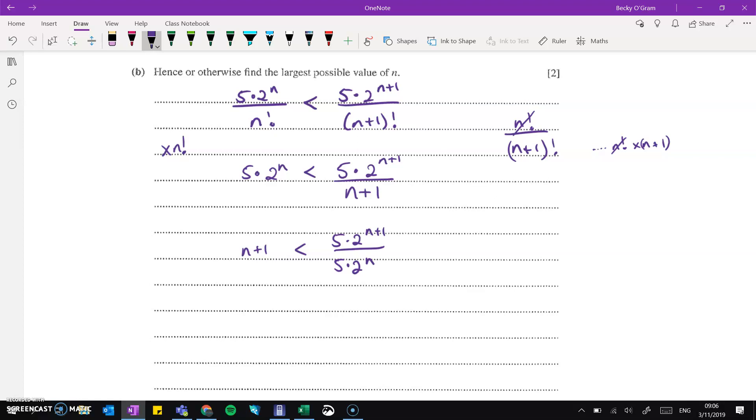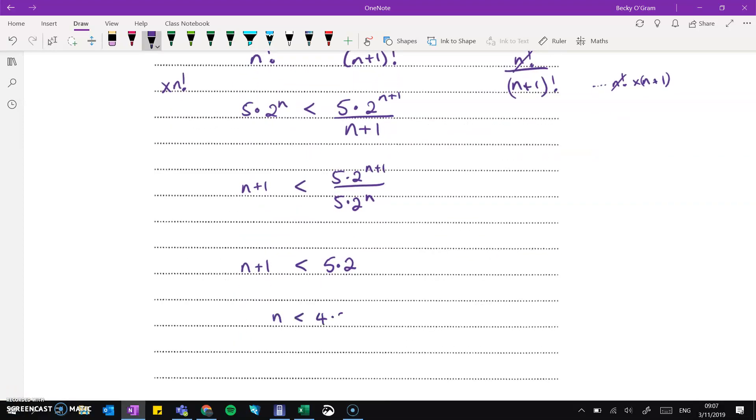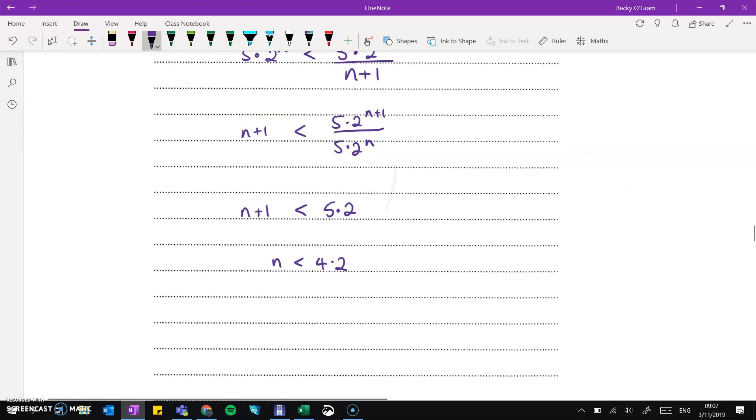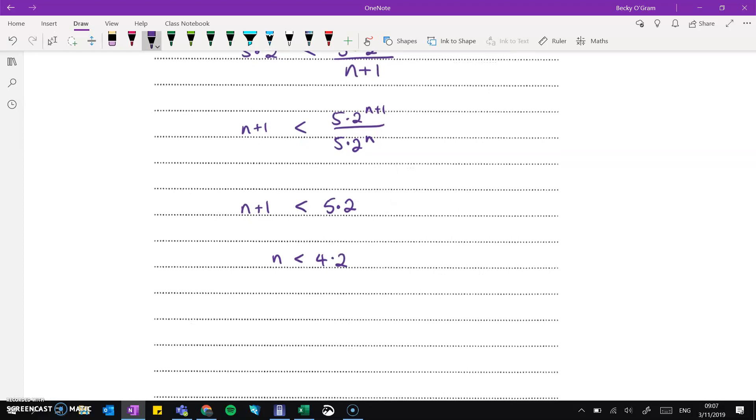Now, a similar thing with what we just did with the n's. If we did 5.2 to the power of n plus 1 divided by 5.2 to the n, then it just means we've got one more on the top than we had on the bottom. So n plus 1 is less than 5.2, meaning that n is less than 4.2. So the largest possible value of n would be 4.